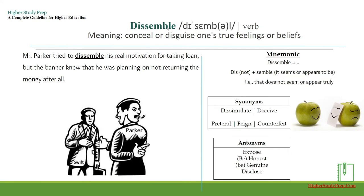'Dissemble' is a verb meaning to conceal or disguise one's true feelings or beliefs. An example: Mr. Parker tried to dissemble his real motivation for taking a loan, but the banker knew that he was planning on not returning the money.